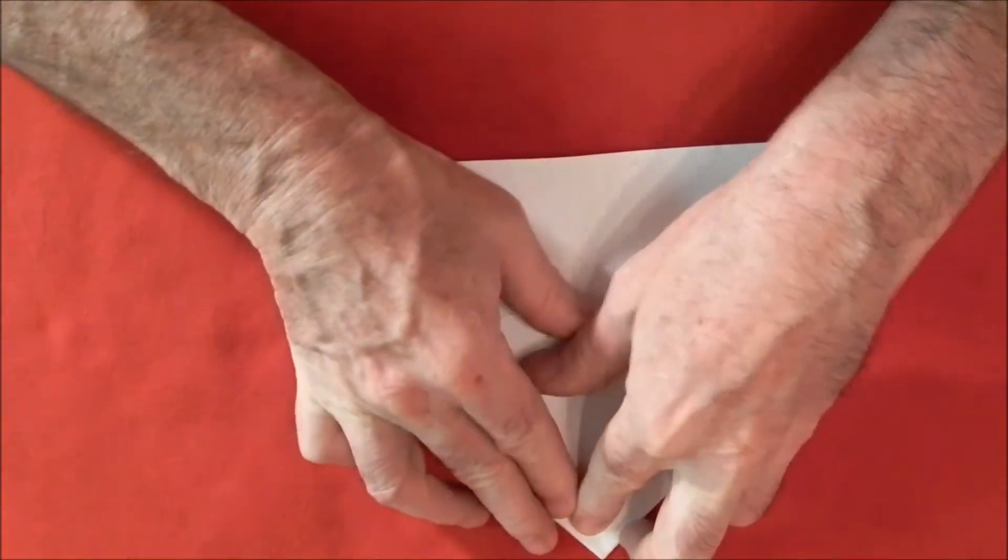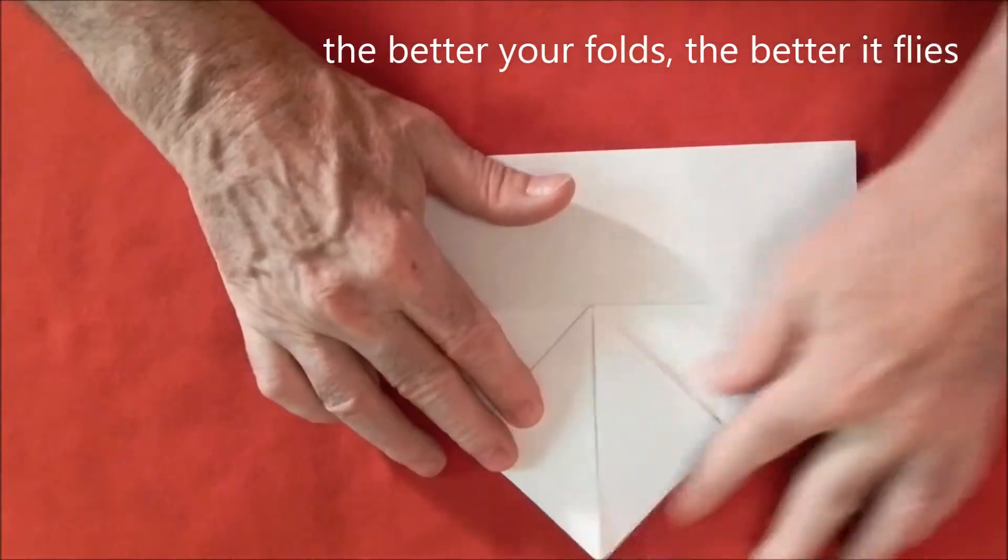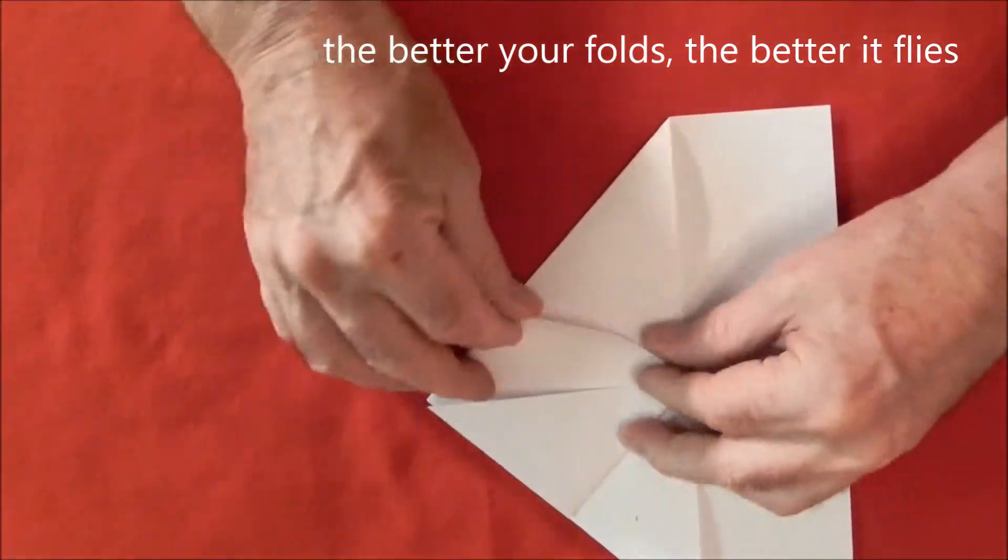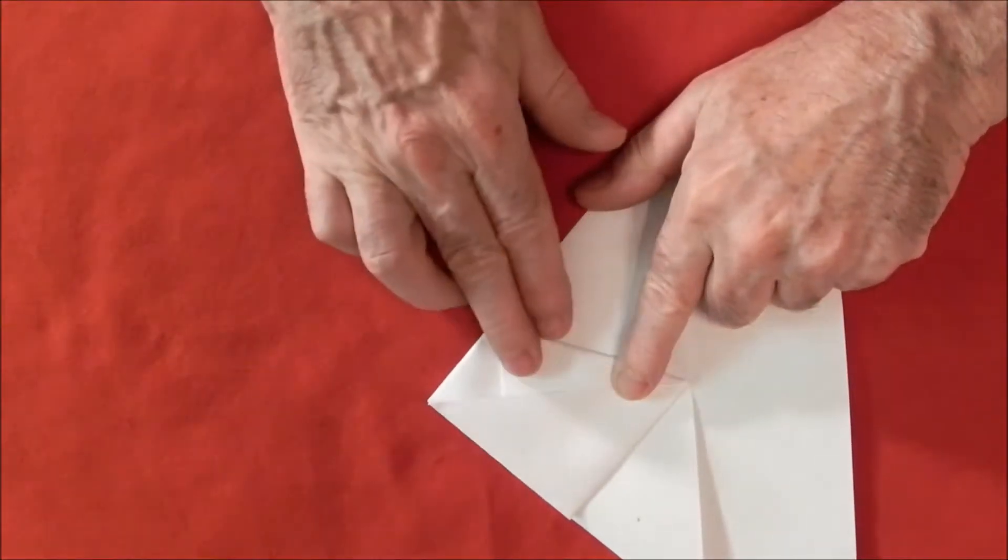Now just the top piece over like that to the point. Close there, close there, close enough for a ship—it's actually a plane. Okay, now we're going to turn it this way. We're going to make one fold like that.